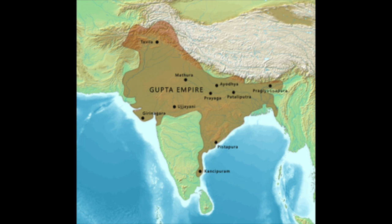While he did also conquer many parts of southern India, he saw such expansion to be incompatible with proper governance for the south, as the capital of the empire, Pataliputra, was in the north. Thus, he refused to annex many southern kingdoms and only collected tributes. Samudragupta's rule saw investments in education, greatly improving living standards for his citizens. Reigning for 45 years, he died in 380 AD.